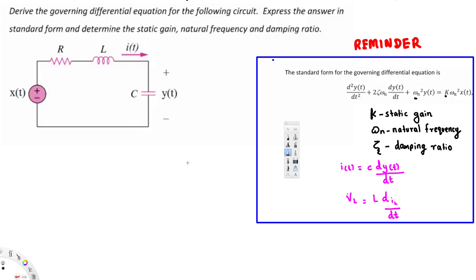Hello guys. In this video we are going to see an example of second-order transient analysis. In this particular problem we are going to derive the governing differential equation for the following circuit, express the answer in standard form, and find the static gain, natural frequency, and damping ratio.